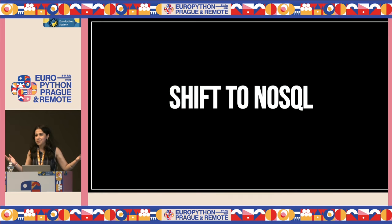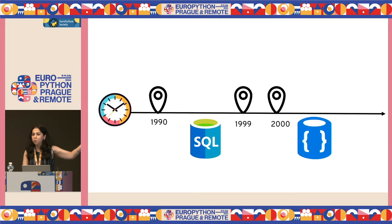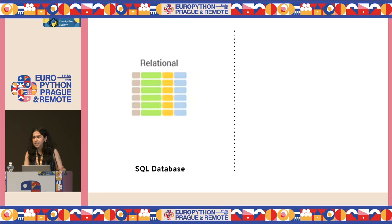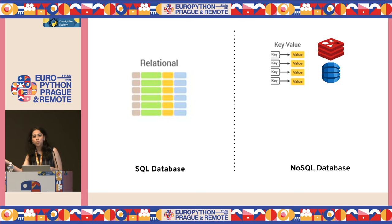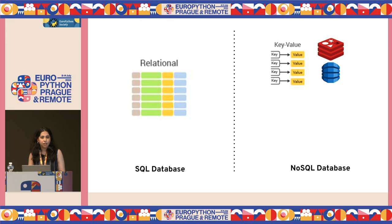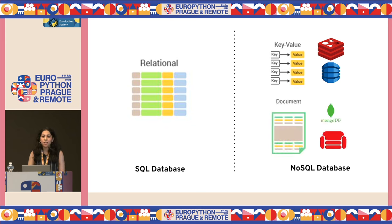Enter NoSQL databases. These newcomers tossed out the rule book and adopted more flexible data storage formats. Unlike their relational counterparts, each format was optimized for a specific need. For example, key-value stores like Redis and DynamoDB, where you could store key-value pairs — unique keys mapped to your values — offer fast data retrieval and flexibility. Or document-based DBs like MongoDB or CouchDB, which store data in the form of JSON documents, offering a middle ground between flexibility and structure.